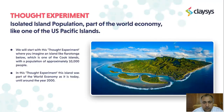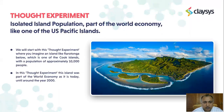To understand what is going on, we need to first imagine a thought experiment — something you just imagine to try to understand something a little better. Imagine an isolated island population that is part of the world economy, like one of the US-specific islands. Imagine an island like Rarotonga — this is a real island, part of the Cook Islands — with a population of approximately 10,000 people. I've broken it down to give you the presentation in a manner that you can understand all the pieces at play.